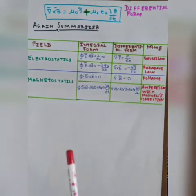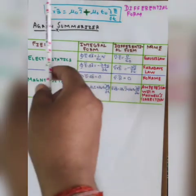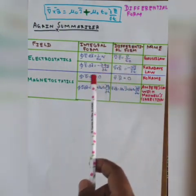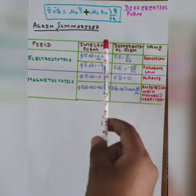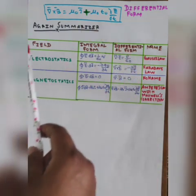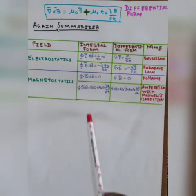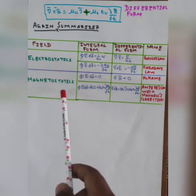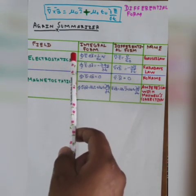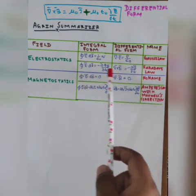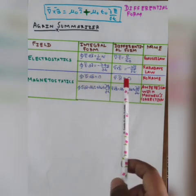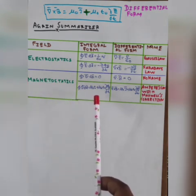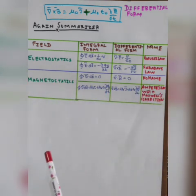In the last slide, I am showing the Ampere law with Maxwell's correction in differential form, and again summarizing all the laws in a table with integral and differential forms. The four laws are: first, Gauss law; second, Faraday's law; third, the no-monopole law; and fourth, Ampere law with Maxwell's correction.